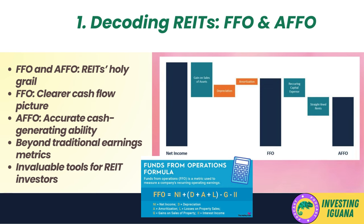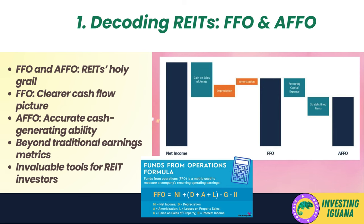First up, let's talk about FFO and AFFO — Funds from Operations and Adjusted Funds from Operations. These metrics are like the holy grail for REITs, providing valuable insights about the cash flow generated from REIT real estate operations. FFO is a measure that adds depreciation and amortization expenses back to net income. These expenses are considered non-cash charges and do not represent actual cash outflows, so adding them back gives a clearer picture of the cash generated by a REIT's operations.